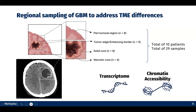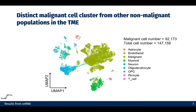For all of the samples, we probed the transcriptome and also the chromatin accessibility profile. Here is the 2D UMAP representation of the samples. In total, we collected around 150,000 cells, and we identified many of the populations known to exist in the glioblastoma patient tumor microenvironment, such as astrocytes, endothelial cells, malignant cells, neurons, and the immune population.